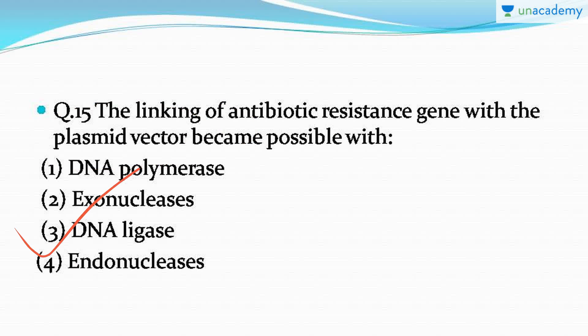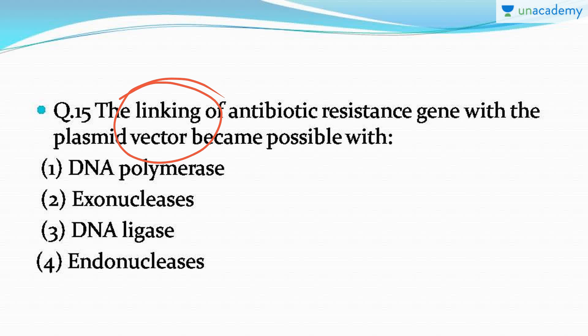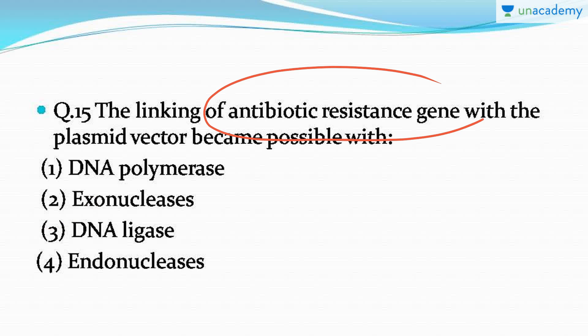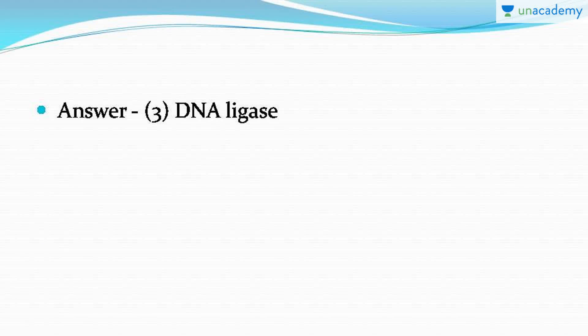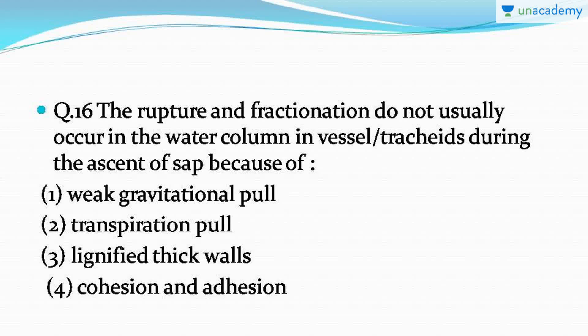The correct answer is option number three: DNA ligase. The word 'linking' is very important here. DNA ligase links two DNA molecules — that is exactly what has been done here. The antibiotic resistance gene is ligated with the plasmid vector with the help of the DNA ligase enzyme.